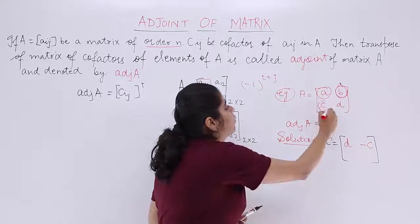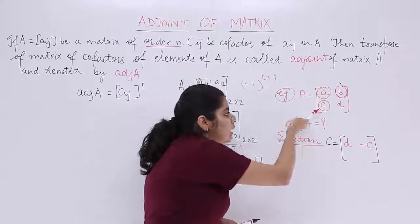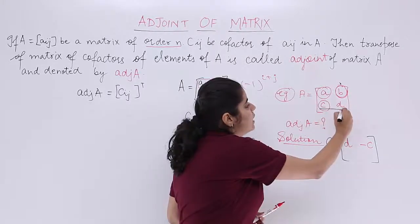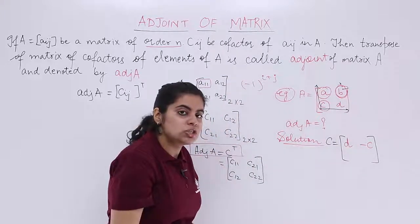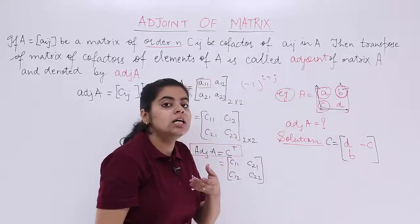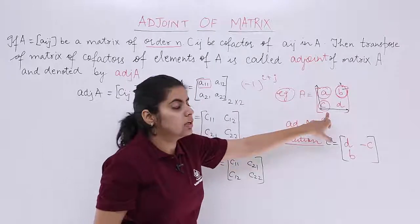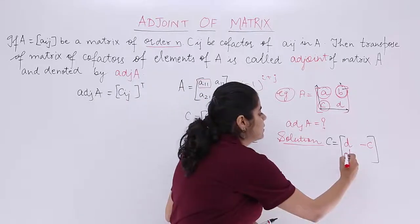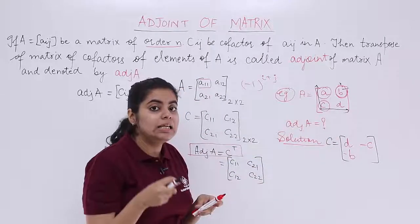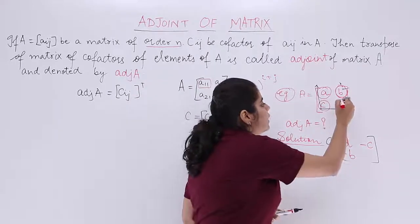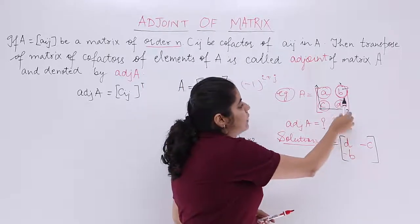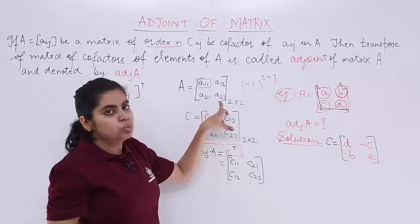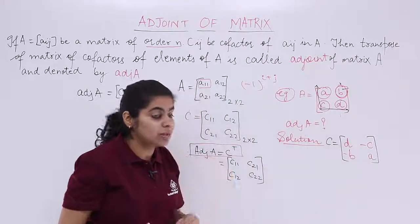Similarly, the cofactor for C: C is at position A21, so leave the second row and first column, leaving only B. The sign: 2 plus 1 equals 3, so minus 1 to the power 3 gives minus sign — so it is minus B. For D, the last element at position A22: remove its row and column, leaving A. The sign: 2 plus 2 equals 4, minus 1 to the power 4 is plus 1. So the cofactor is plus A.